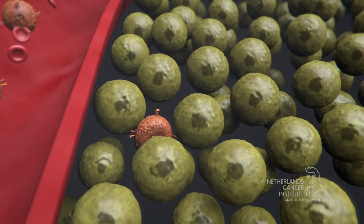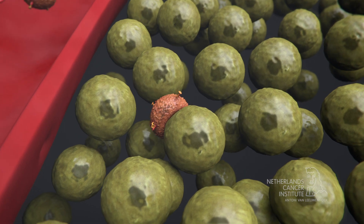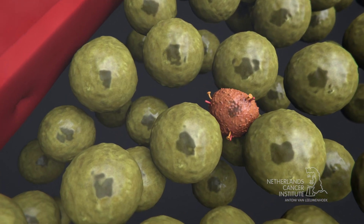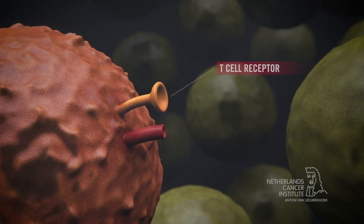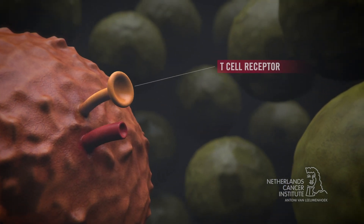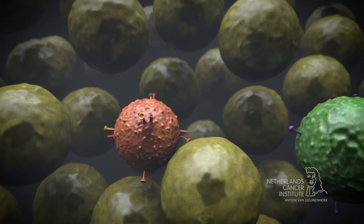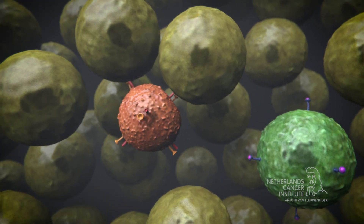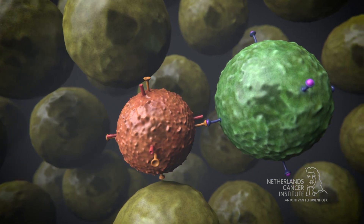When a T cell travels through the body, it will examine all the cells it encounters. To do this, the T cell uses an antenna-like structure called the T cell receptor. Using its T cell receptor, the T cell checks whether a cell is abnormal — for example, whether it has been affected by a virus, as shown here.